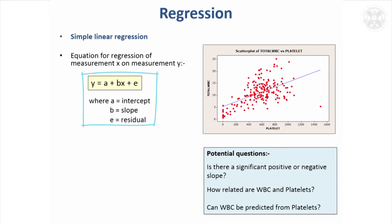The equation looks like this: the y-axis is equal to a constant which I've called 'a' — that's the value where the line hits zero — and then it's plus a slope, which is a constant 'b' multiplied by the x value. The larger b is, the steeper the slope. There's also an error term, because the slope doesn't exactly predict the data.